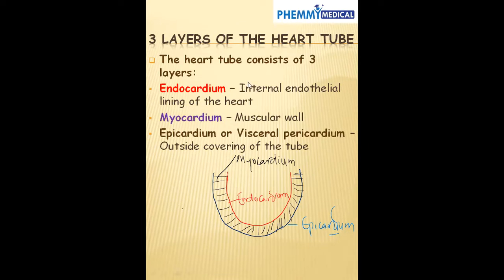Next is the three layers of the heart tube. The heart tube consists of three layers starting from inside. We have the endocardium, which is the internal endothelial lining of the heart. We have our myocardium. We have the epicardium or the visceral pericardium, which is the outside covering of the tube. Inside is the endocardium, followed by the muscular layer which is the myocardium, and the outer layer which is the epicardium.